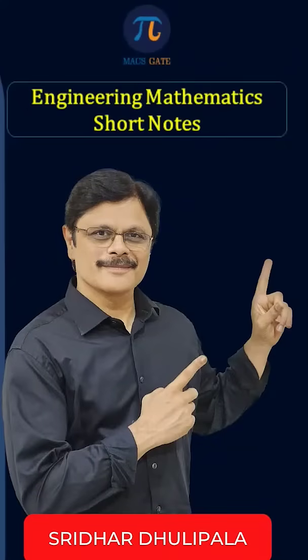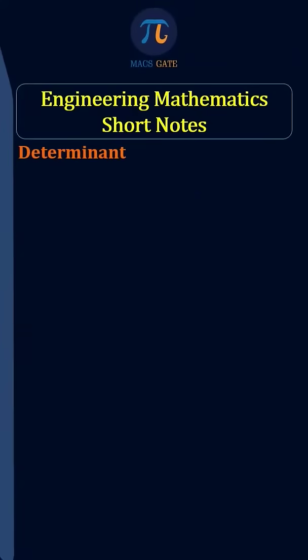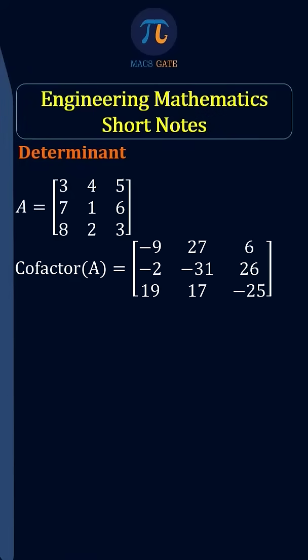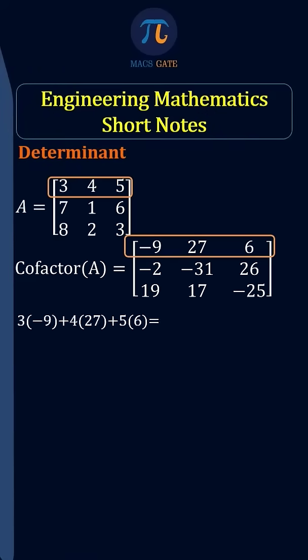Hi, let us see how to find the determinant of a square matrix. Consider a 3 by 3 matrix A and its cofactor matrix. Multiply the first row elements with corresponding cofactors and add.